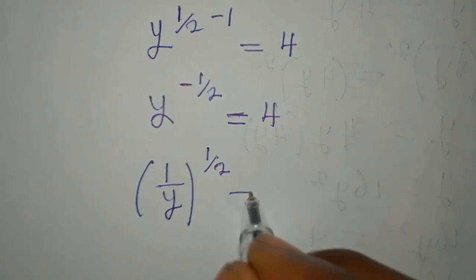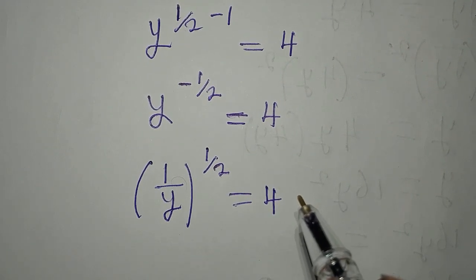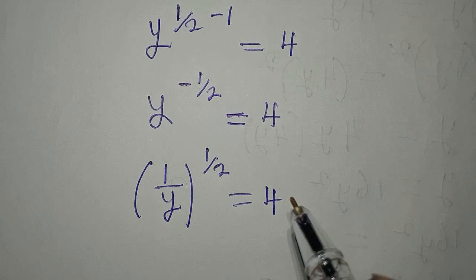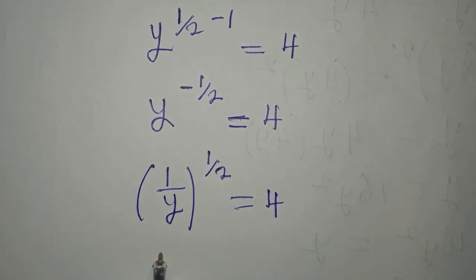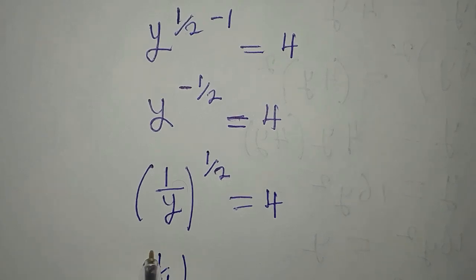Now what do we do? Let's remove this negative power so that we have 1 over y, then to the power of 1 over 2, and it is equal to 4. Now what will I do?